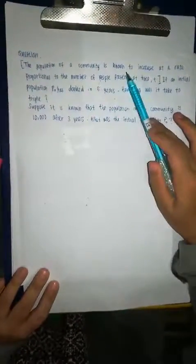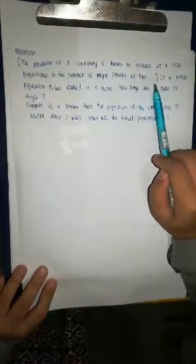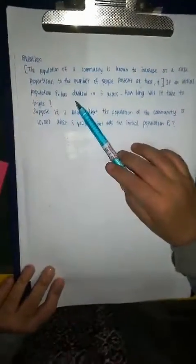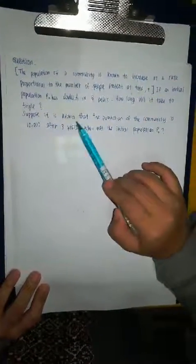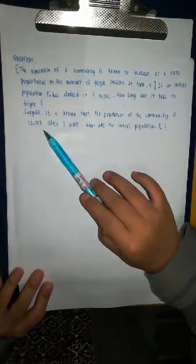So, our question is, the population of a community is known to increase at a rate proportional to the number of people present at time T. If an initial population P₀ has doubled in 5 years, how long will it take to triple? Suppose it is known that the population of the community is 10,000 after 3 years. What was the initial population P₀?